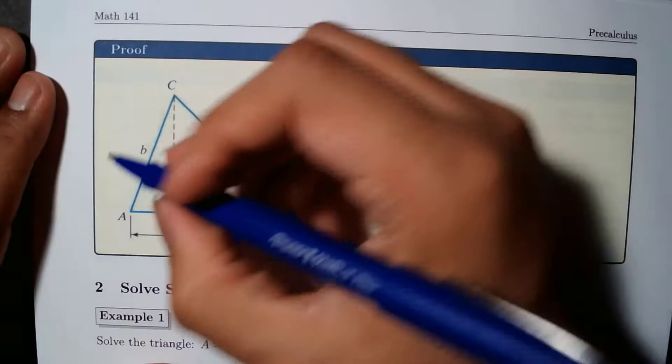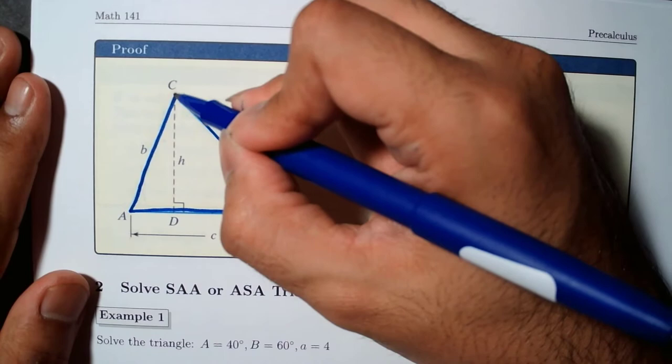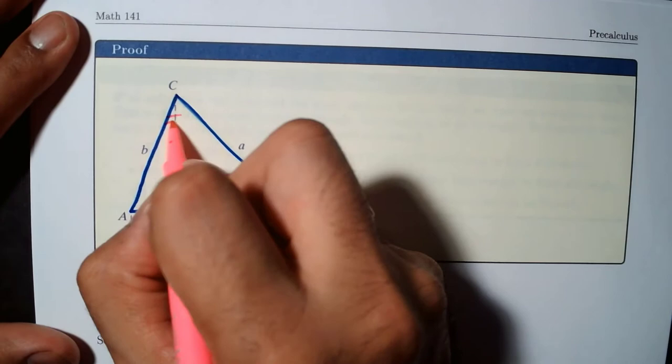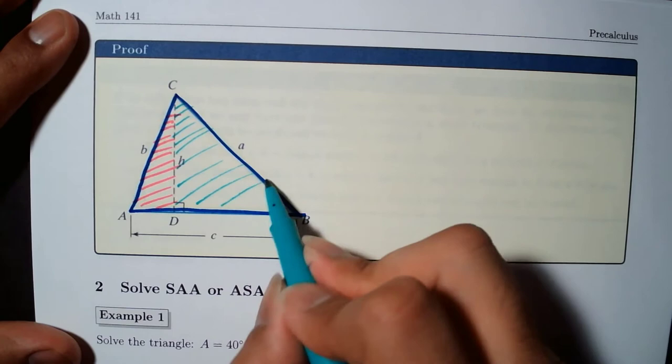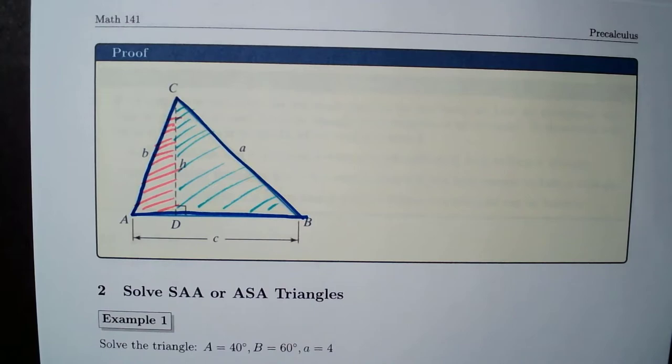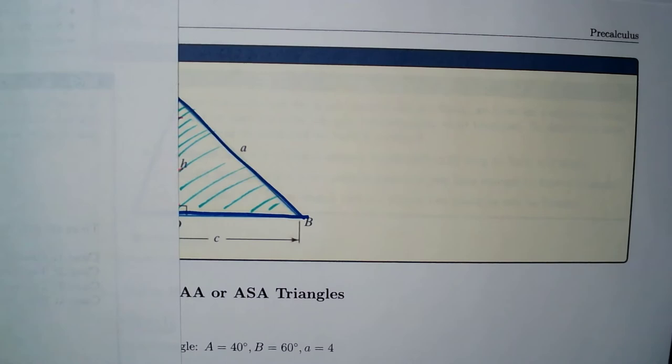This is our triangle that we're working on. The dashed line cuts this into two right triangles. Let me shade them with two different colors just so we don't get confused when we set up the two triangles. Given this big triangle is not a right triangle, but if we cut it like this, we're going to have one right triangle to the right and another right triangle to the left.